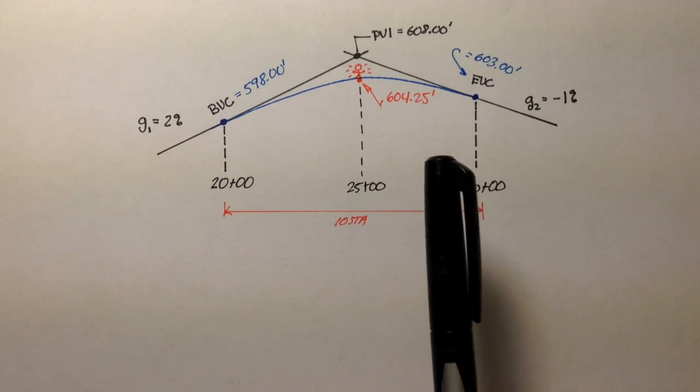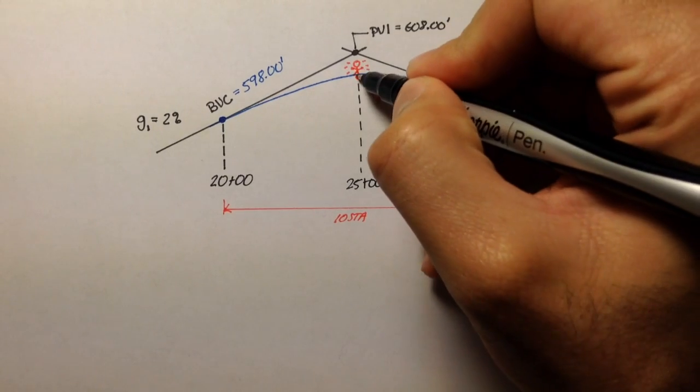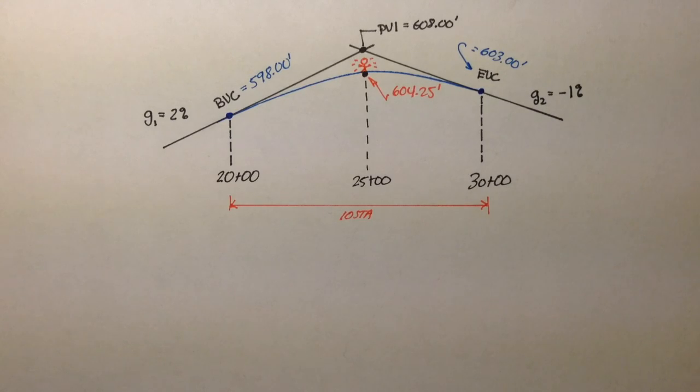We also used that information to figure out what the elevation of this point was, and that point was 604.25. And in this video, we want to find the elevation of the highest point on this vertical curve. This is a crest curve, so it's going to have a high point. In order to do that, we need to first locate where that high point is stationed.